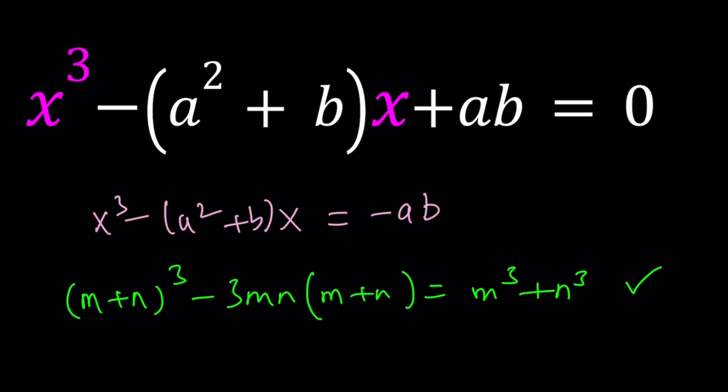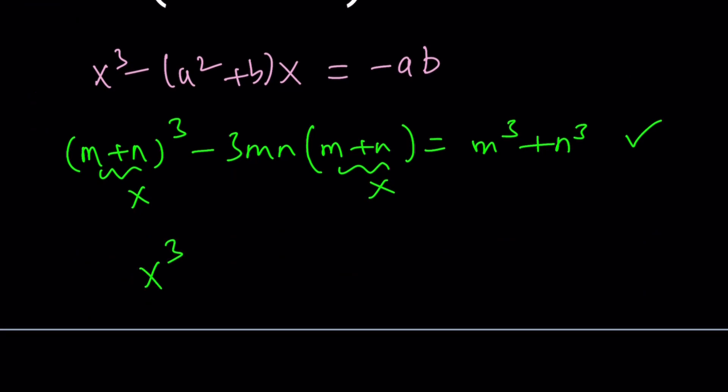But the idea here is basically replacing M+N with x. And then we'll get a cubic equation that kind of looks like ours, except the coefficients need to be adjusted. And that's easy to do. We can go ahead and do the following.